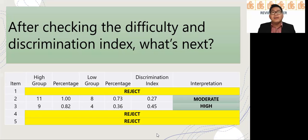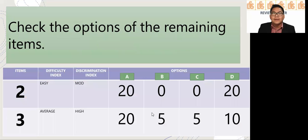Now, after checking the difficulty index and discrimination index, what's next? Check the options of the remaining items. These are not yet your good items. You have to check the options.